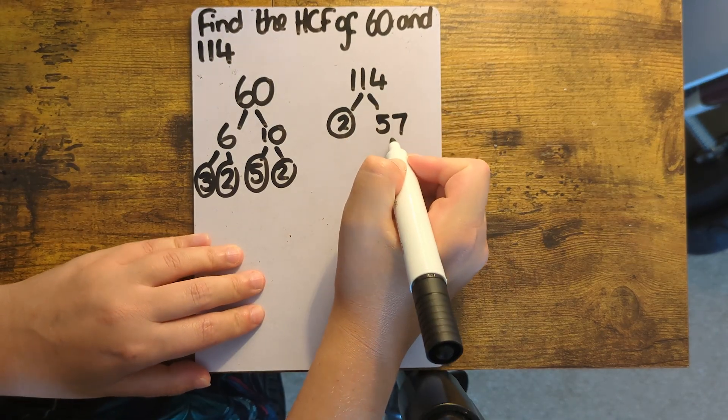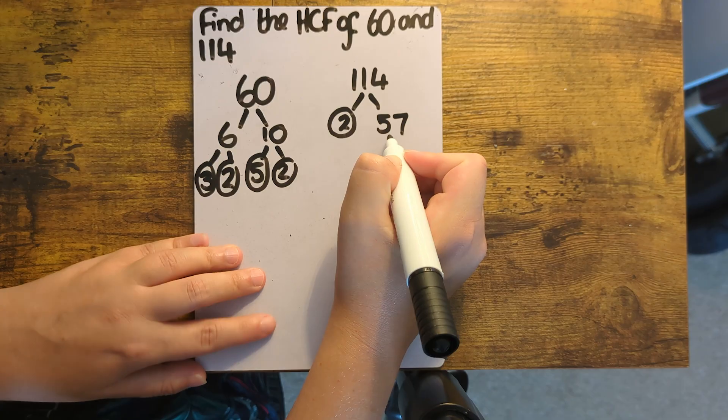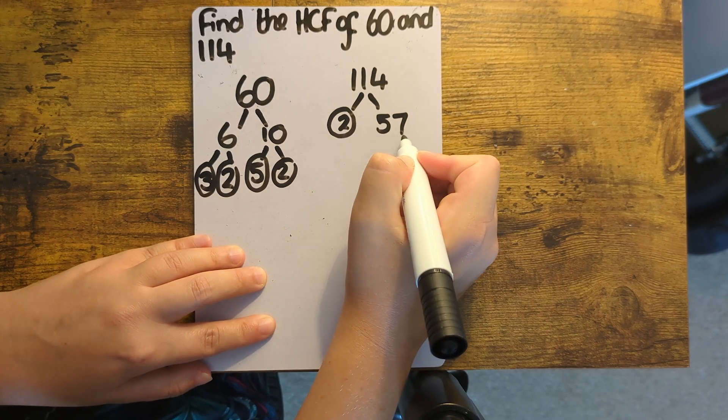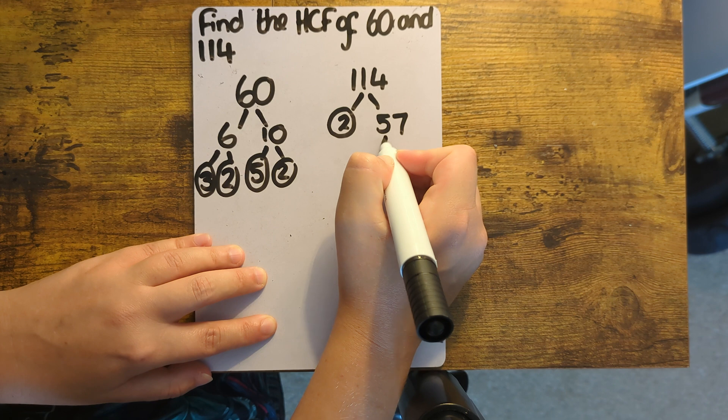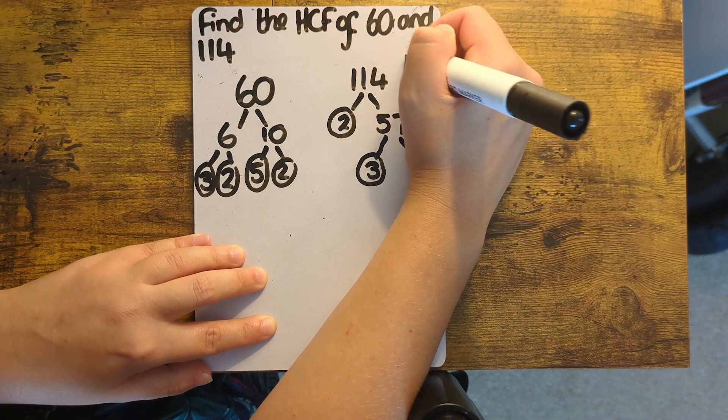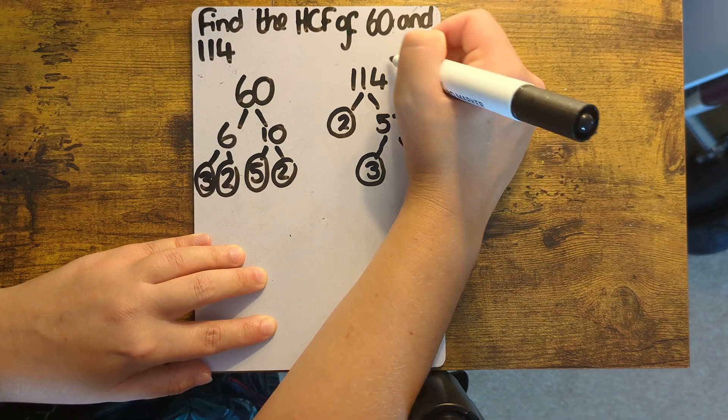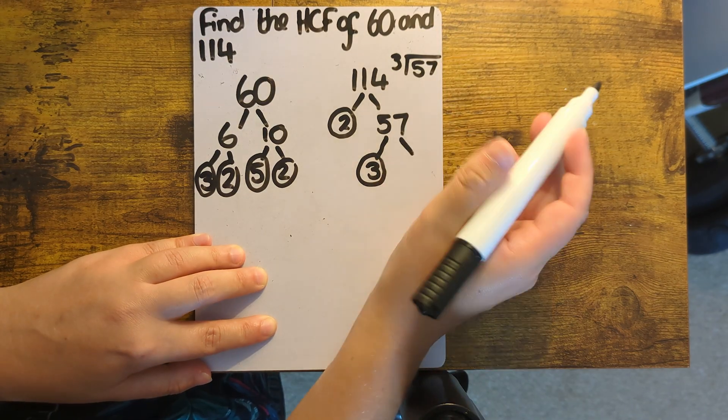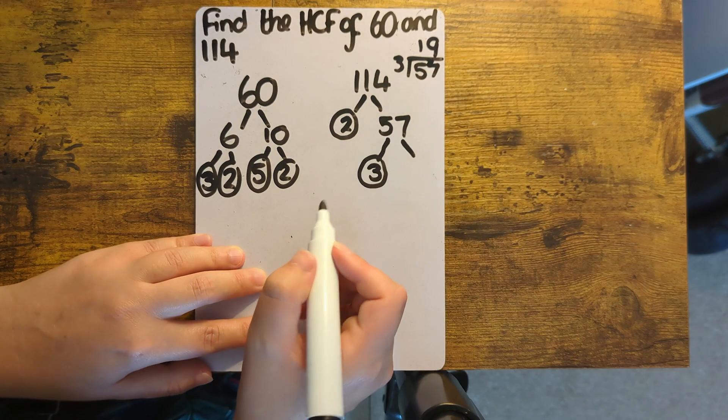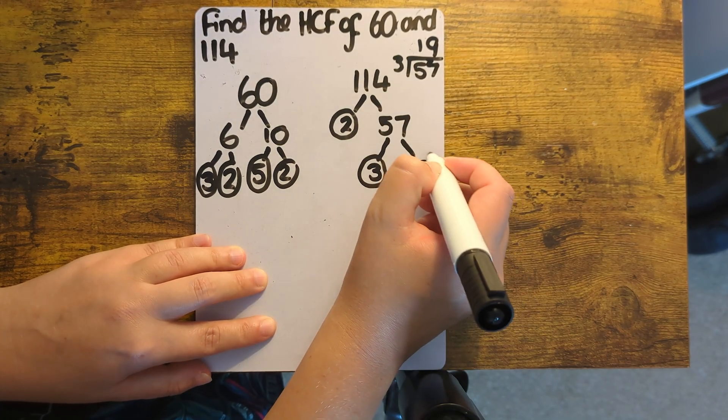Now 57 is a tricky number to work out factors for, so I've got a video on how to find tricky factors, but 57 is divisible by 3. I'm going to use bus stop method to work this out. I'm going to put my 19 there and circling it because it's a prime number.